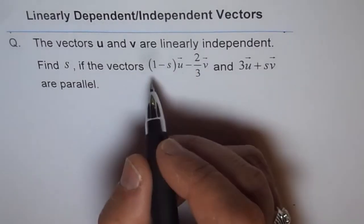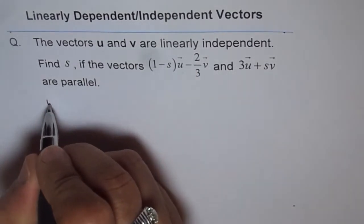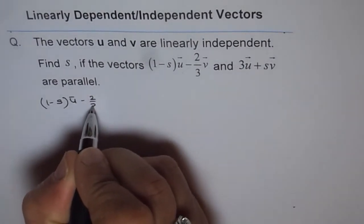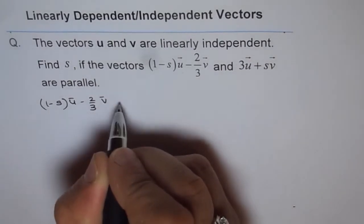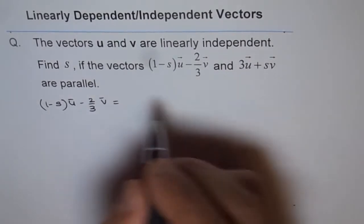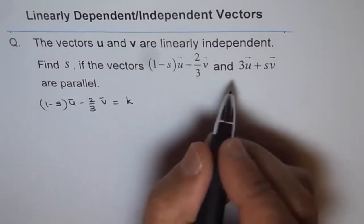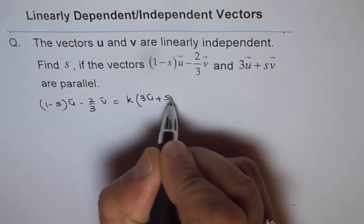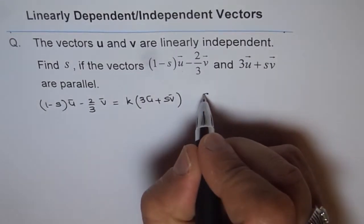Now, let's try to solve it. So, that means we have (1-s) times vector u minus 2/3 vector v should be equal to k times a scalar 3u plus sv, since they are parallel.